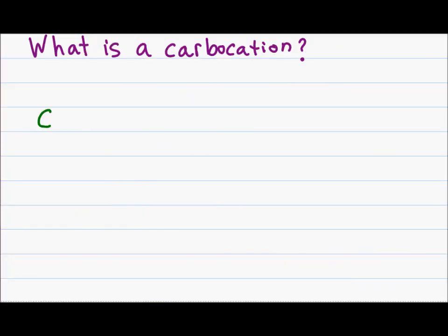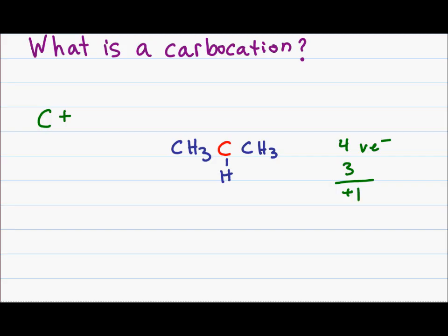A carbocation is a carbon that has a positive charge due to an incomplete octet where the carbon is missing electrons. The central carbon, highlighted in red, only has three other atoms attached to it. Carbon should have four valence electrons, but due to the three bonds from two carbons and one hydrogen, this carbon only has three electrons directly attached to it. Four minus three gives me plus one, and that's where I get the positive charge on my carbocation.